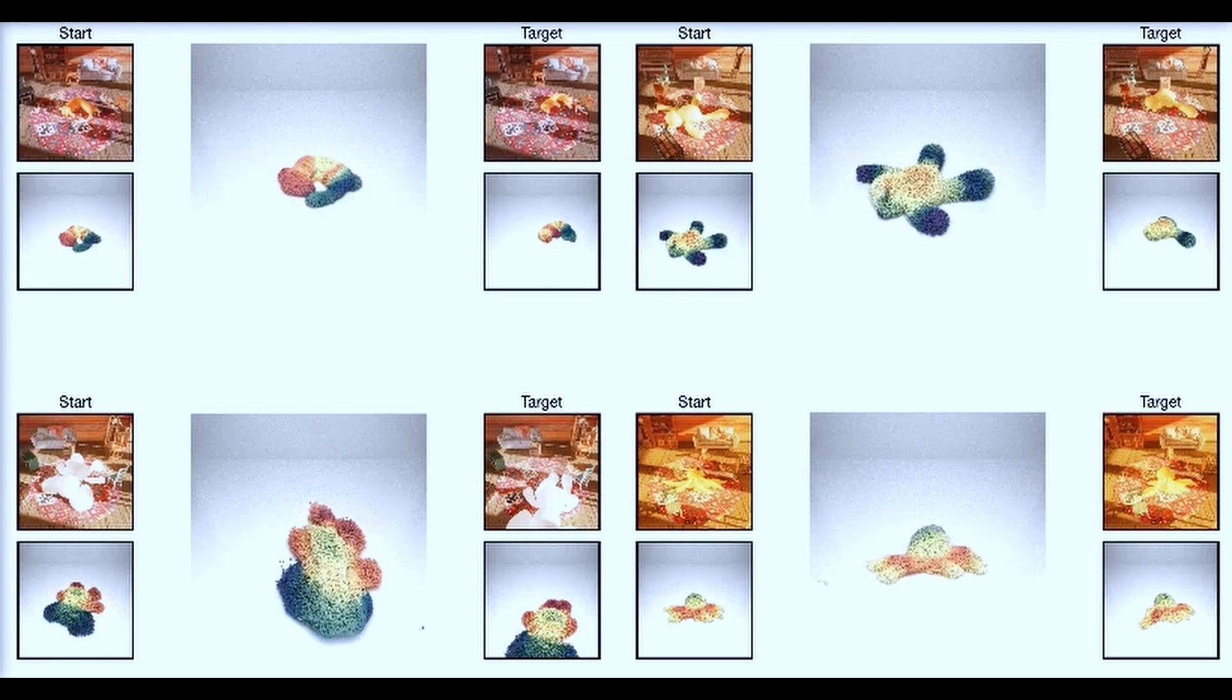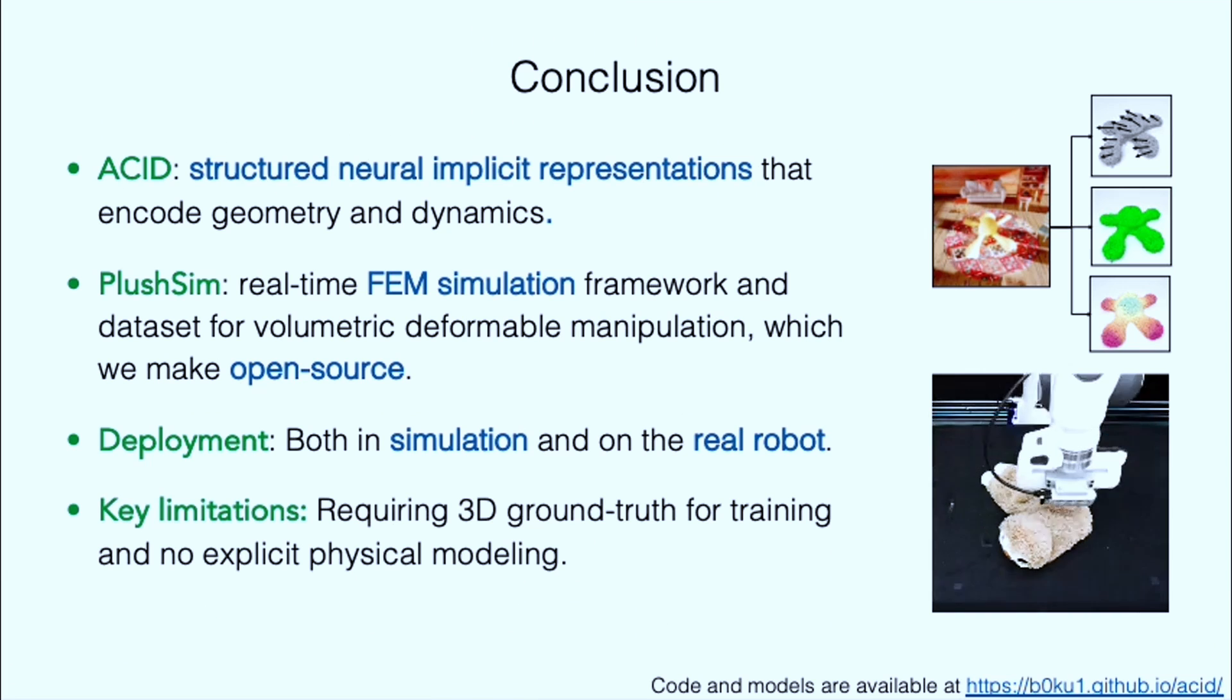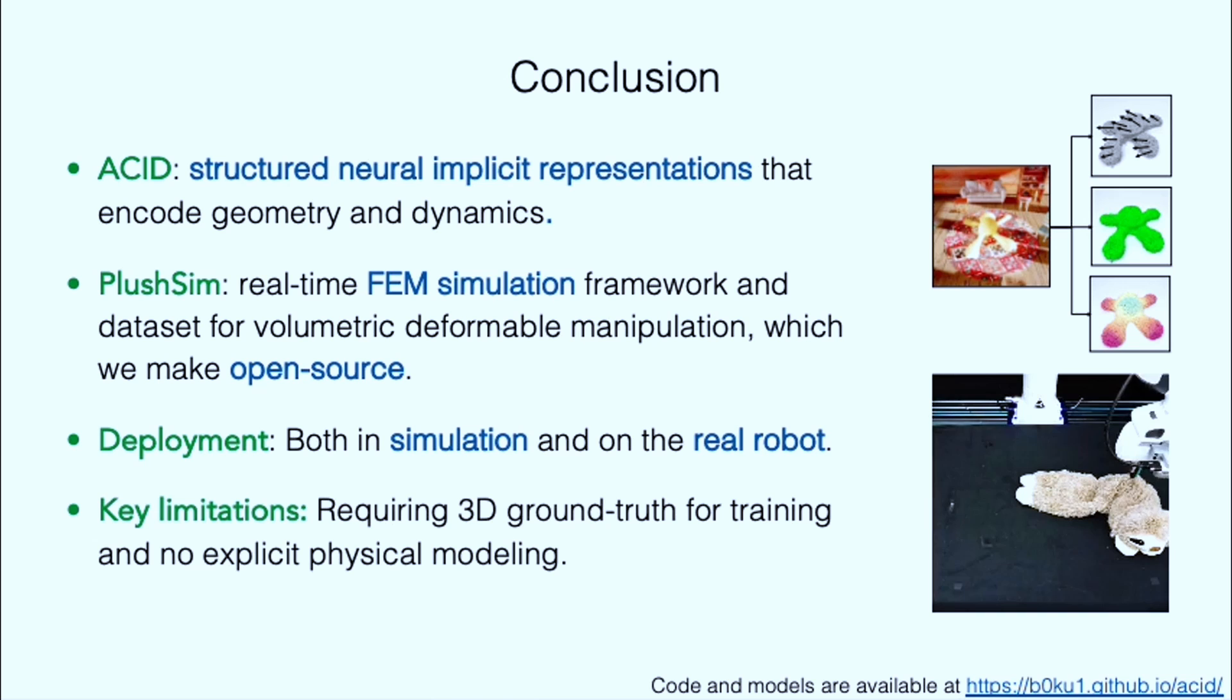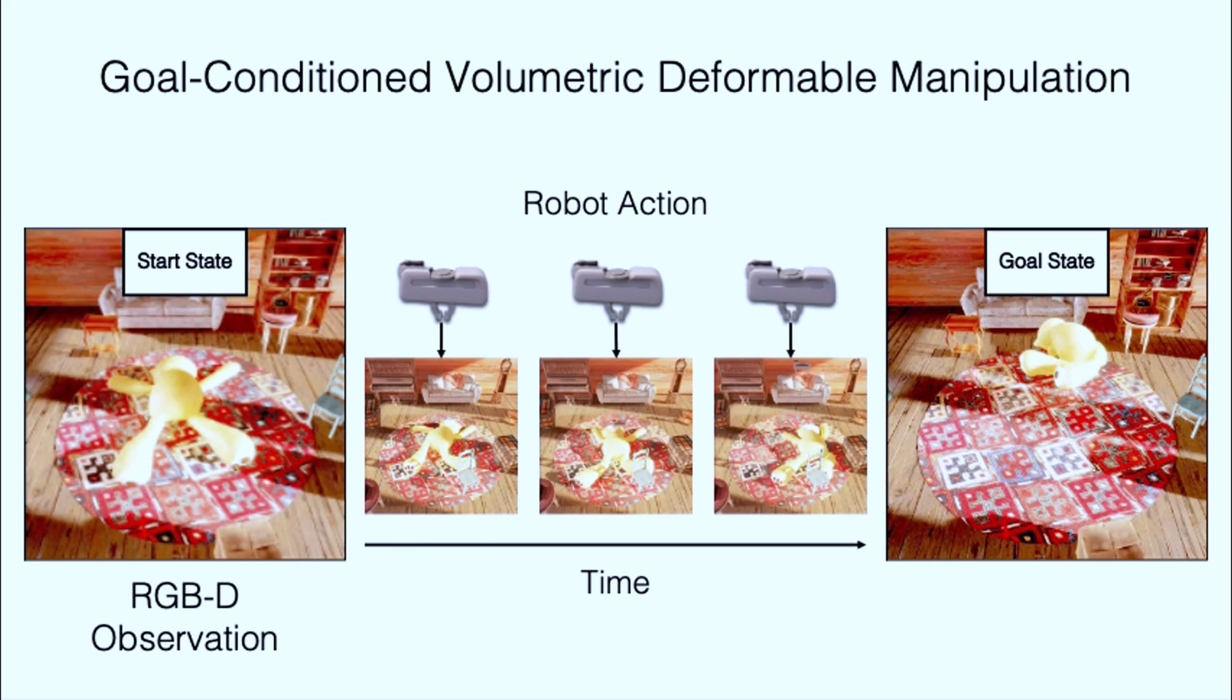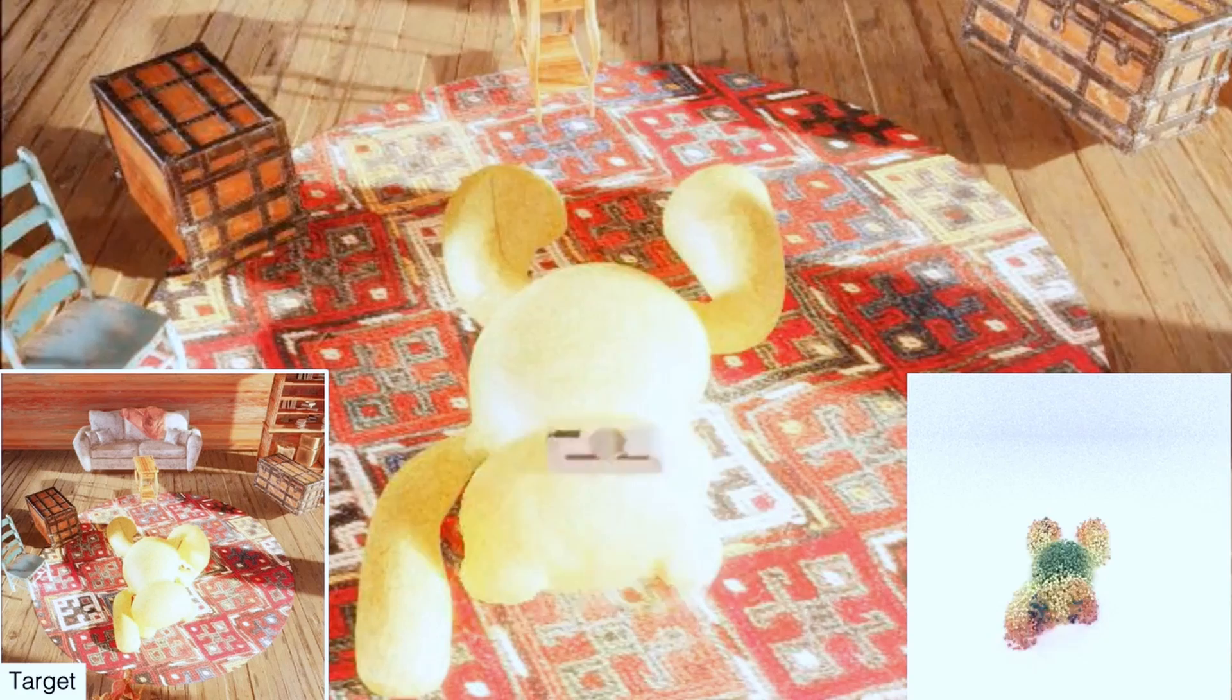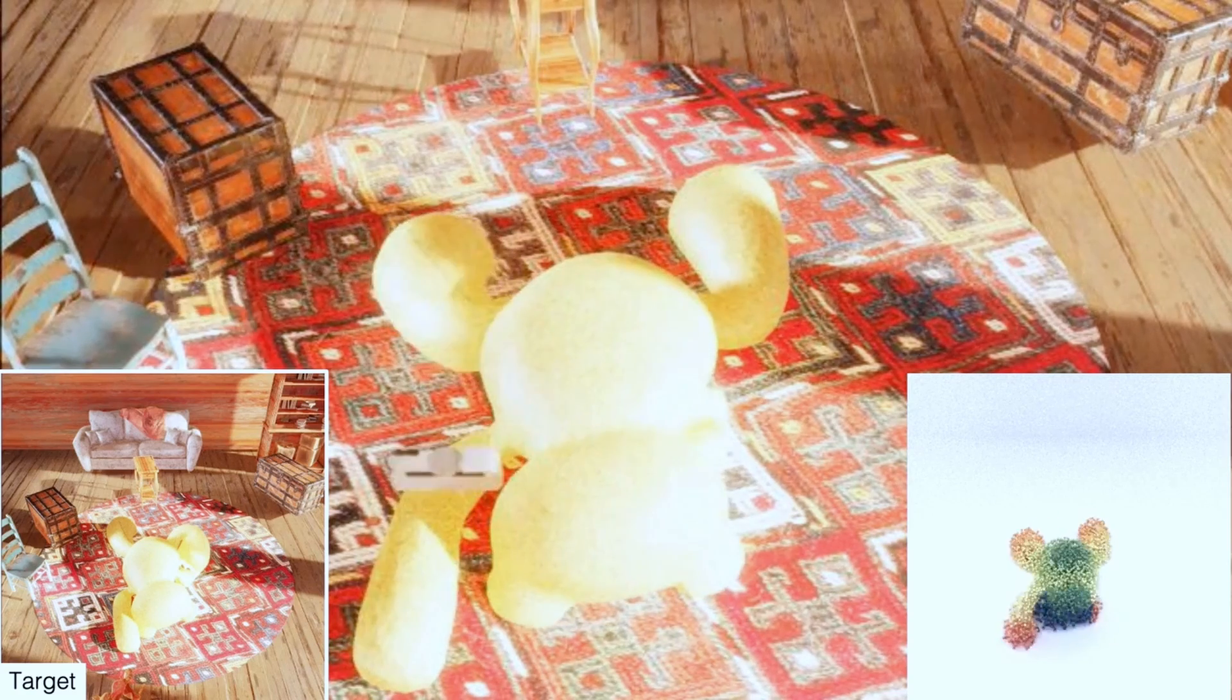They applied ACID to real-world deformable objects trained with simulated dynamics, allowing the ACID-based model to generalize to objects with different appearances and dynamics. The ACID dynamics models are successfully employed to goal-conditioned deformable manipulation tasks, resulting in a 30% increase in task success rate over the strongest baseline.